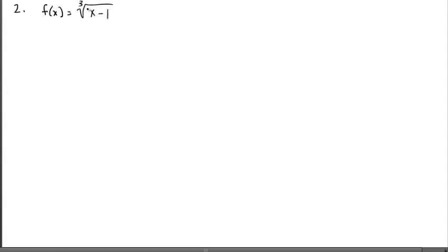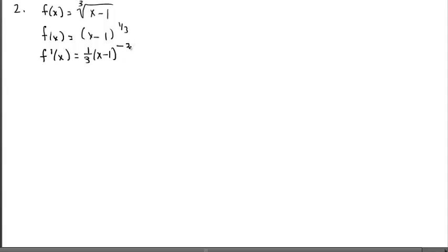The first thing I identify is that the domain of the function is all real numbers. To get it ready for differentiation, I'm going to rewrite it as a rational exponent and apply the chain rule. The derivative of the inside is just one so I'll leave it alone. I'm going to clean this derivative up and make it a fraction. It appears that everything goes to the denominator, so I'm left with one on top.